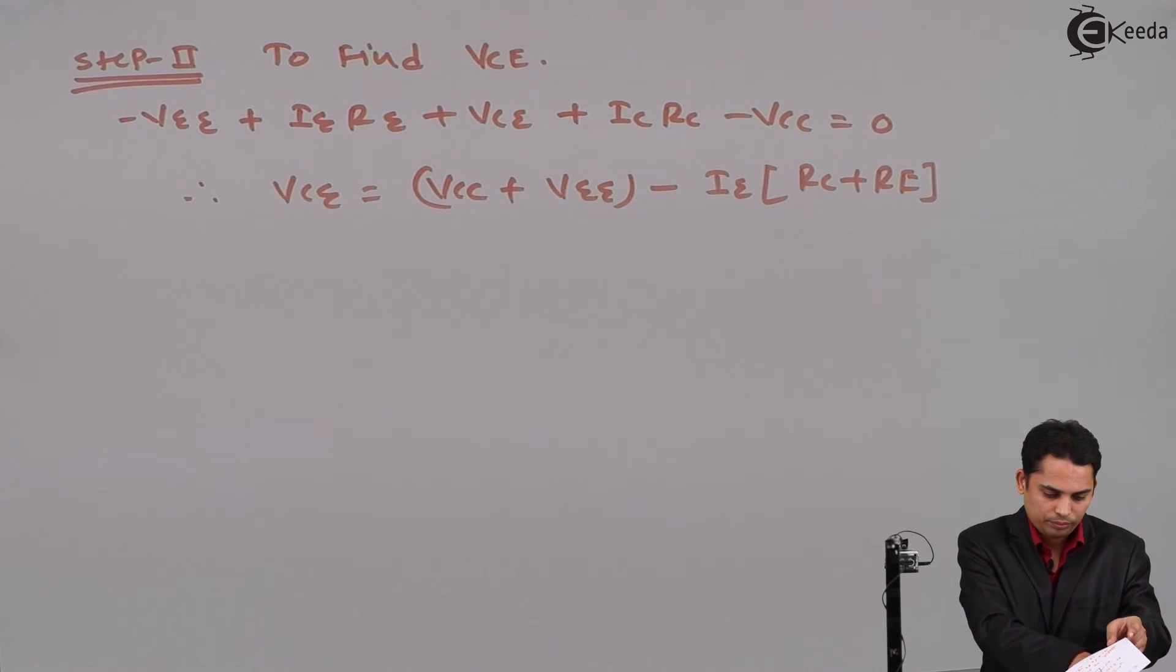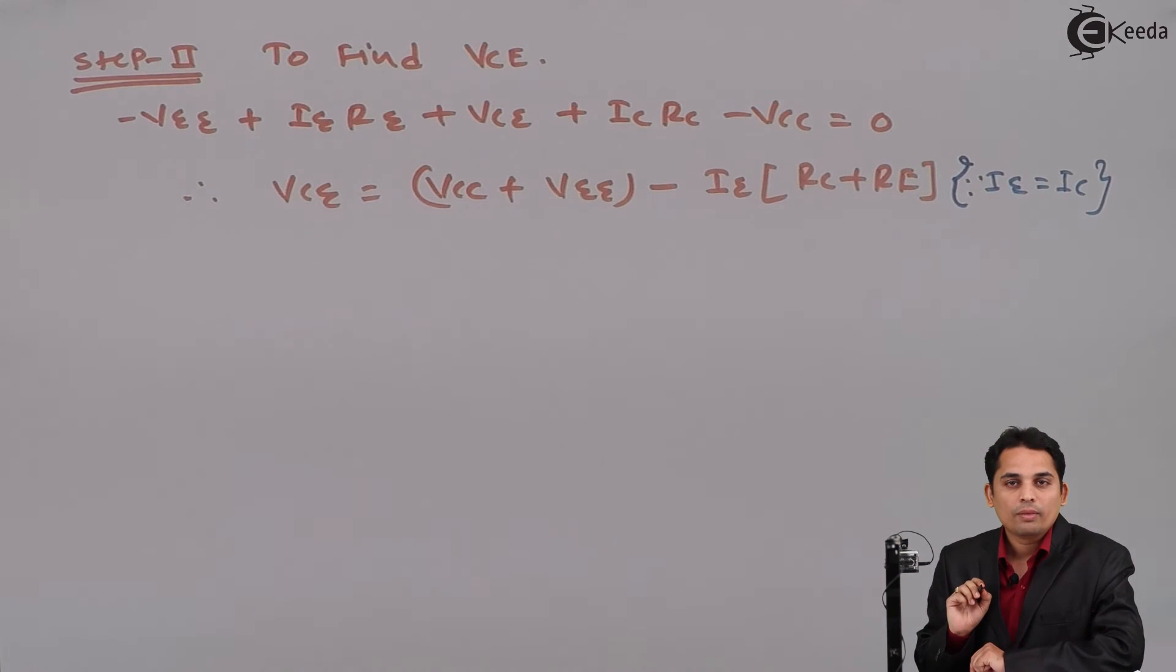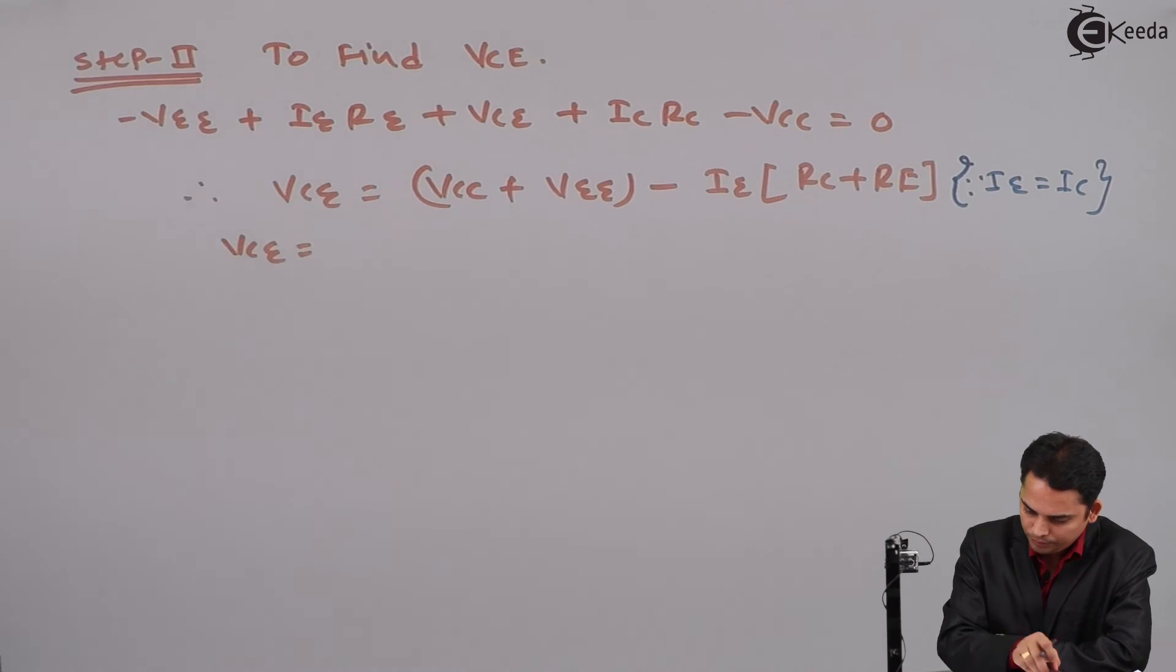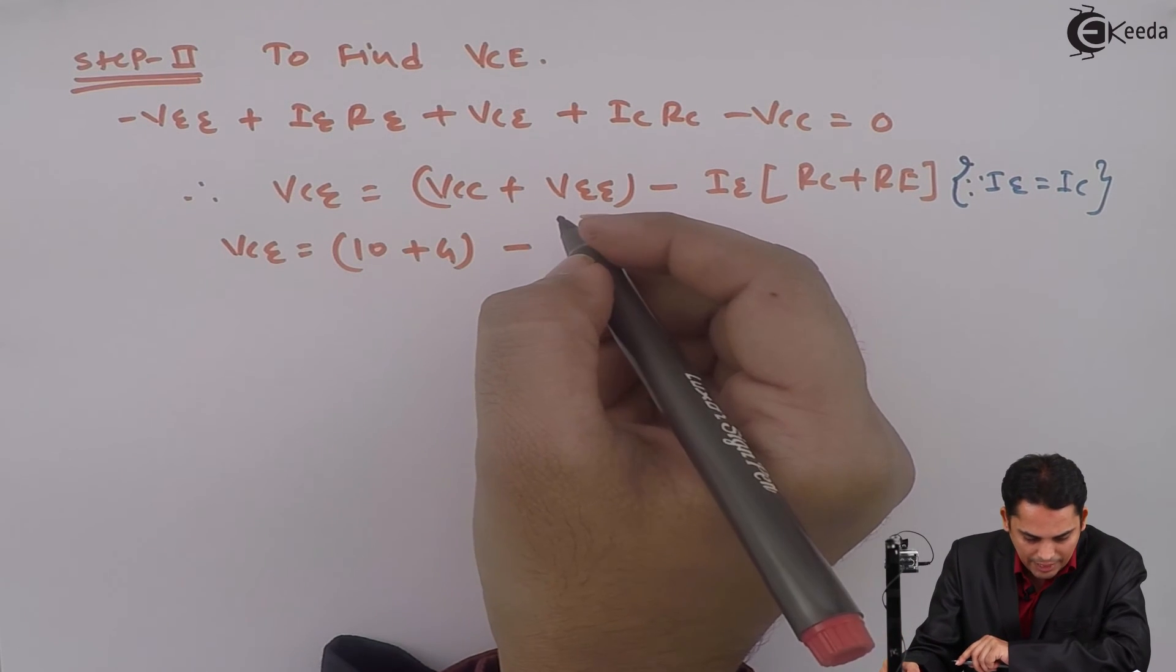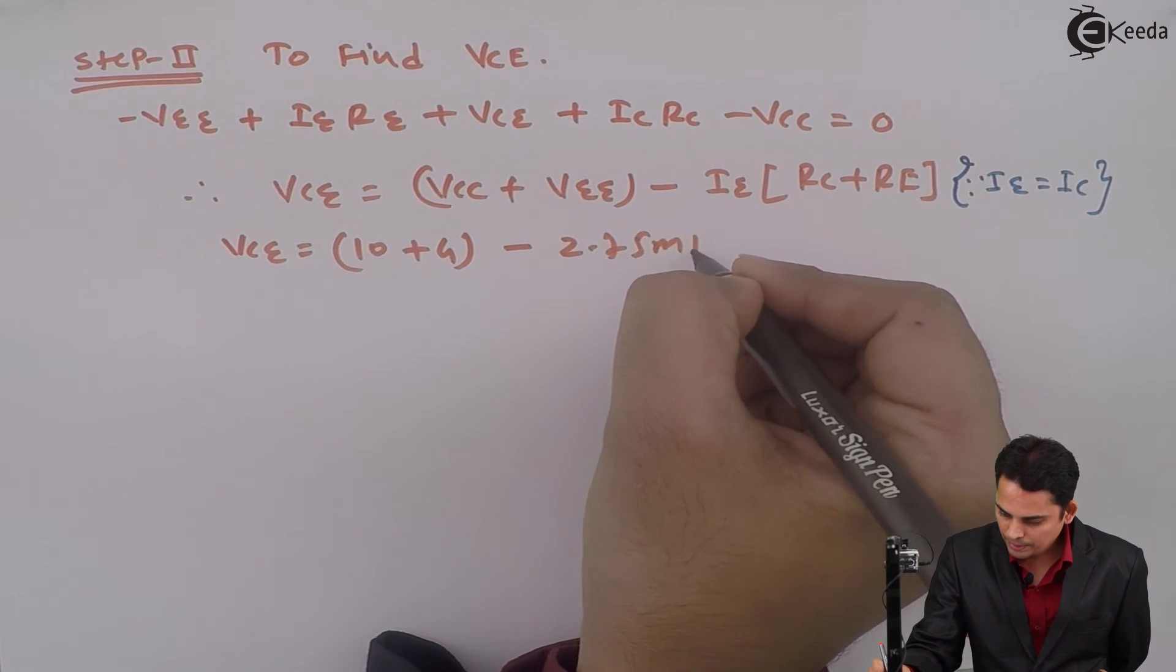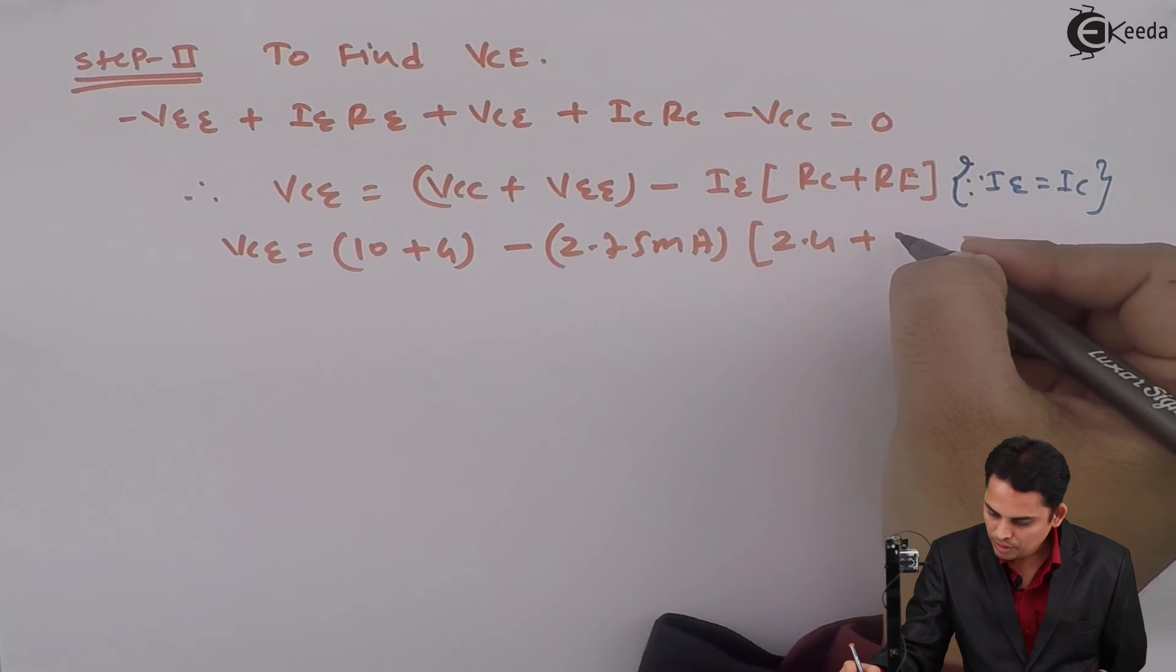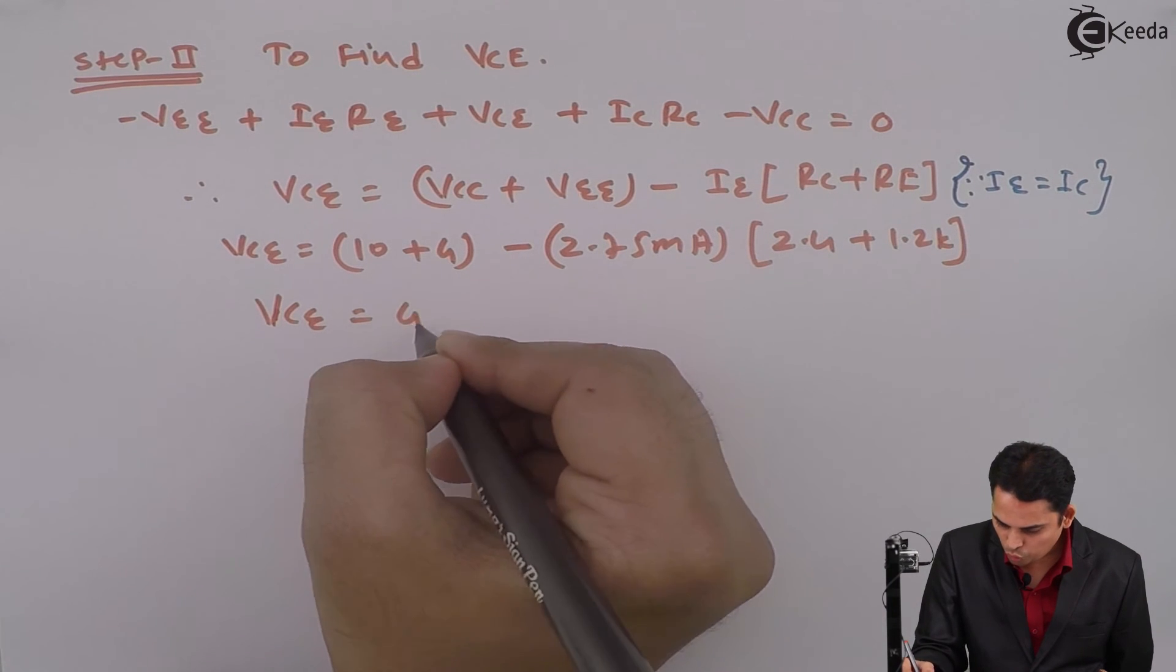Since IE is equal to IC, I can write IE multiplied by RC plus RE. If we substitute the values, then VCE is equal to VCC given as 10 volts plus 4 volts minus IE which is 2.75 milliampere multiplied by 2.4K plus 1.2K. Hence, VCE is equal to 4.1 volts.